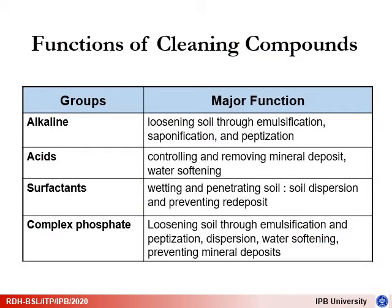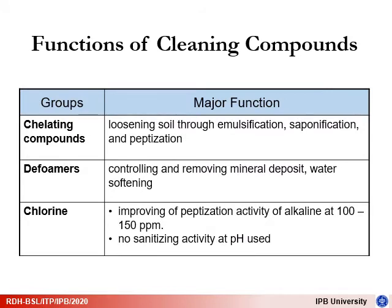This table summarizes the types of cleaning compounds and their functions. Alkaline cleaners generally loosen soil through emulsification, saponification, and peptidization, while acid cleaners control and remove mineral deposits. Chelating compounds loosen soil through emulsification, saponification, and peptidization. Reformers control and remove mineral deposits, and chlorine is generally added to improve peptidization activity — though the use of chlorine for this purpose usually does not provide sanitizing activity.